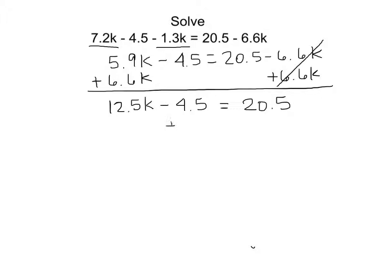Now I'm going to add 4.5 to both sides, because I want numbers on one side and terms with k on the other. Negative 4.5 plus 4.5 cancel out, so I'll have 12.5k equals 25.